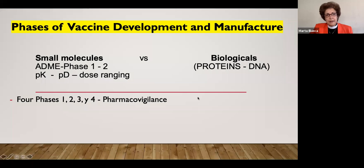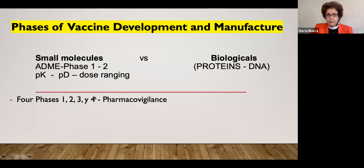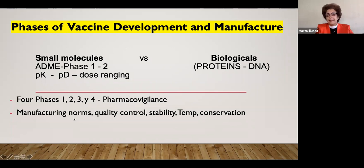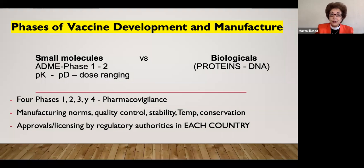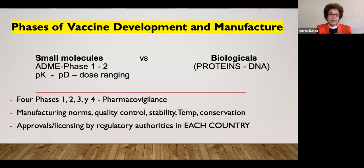There are four phases of development that I'm going to explain, from one to four, and then there is an ongoing period of pharmacovigilance that continues throughout the lifetime of any approved subject. In the case of vaccines specifically, we have very tight and strict manufacturing norms, rules for quality control, stability, and very narrow ranges of temperature where the product has to be kept to assure its conservation.